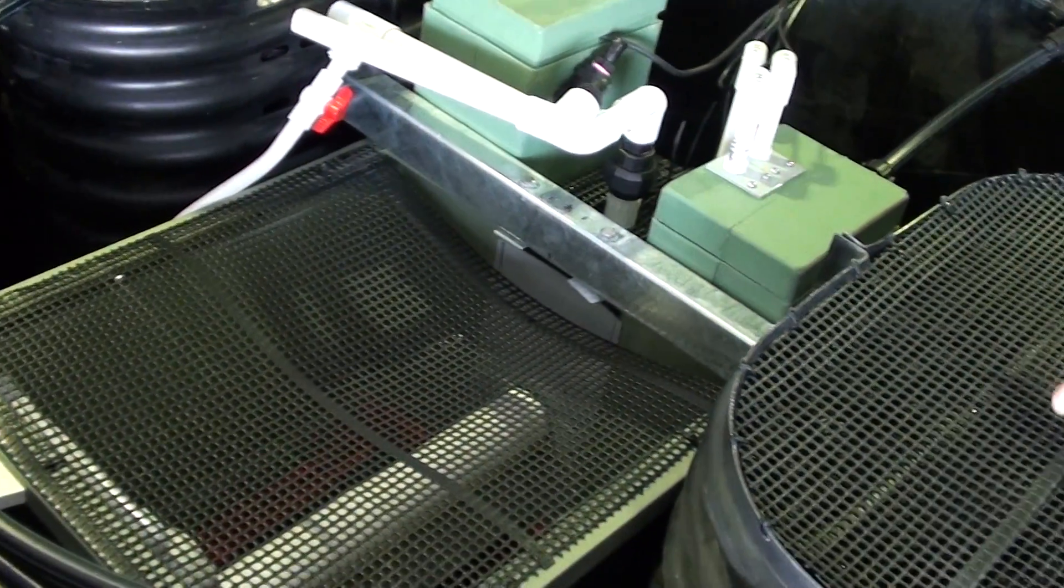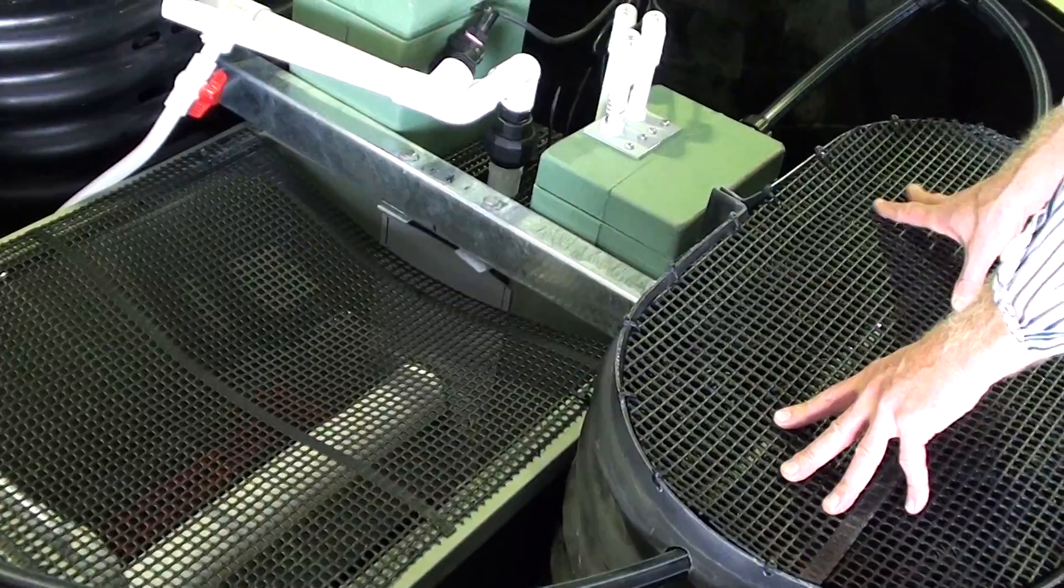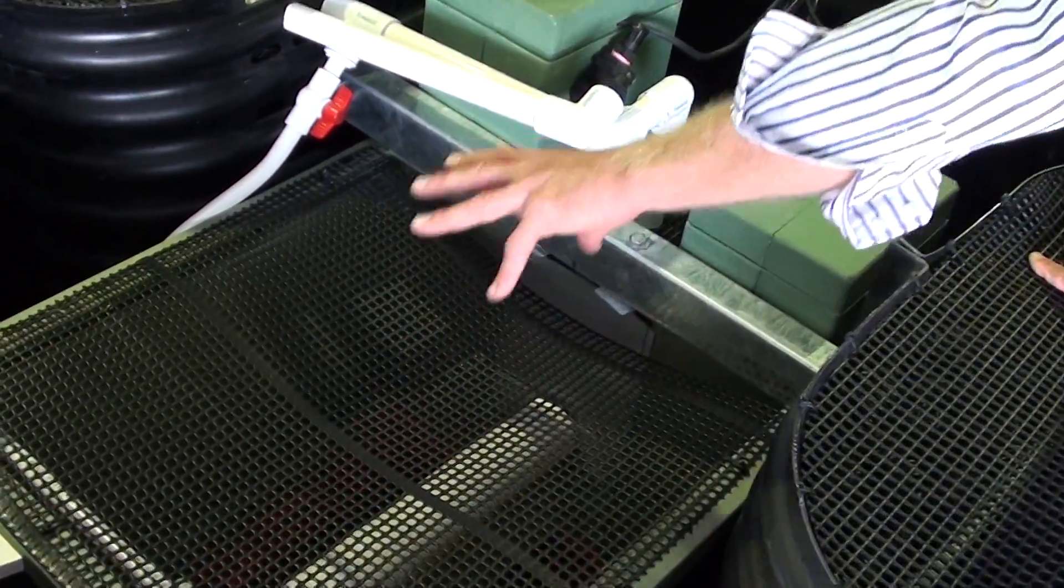Inside the tank here, there are basically two compartments. This compartment here is a worm farm or worm box.